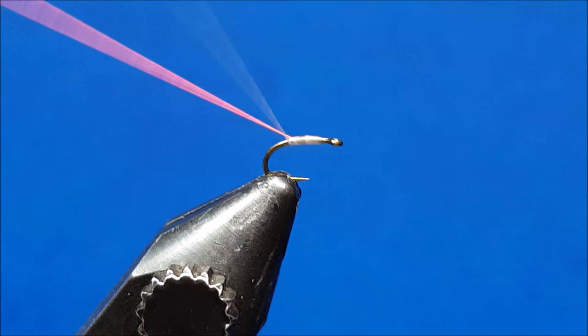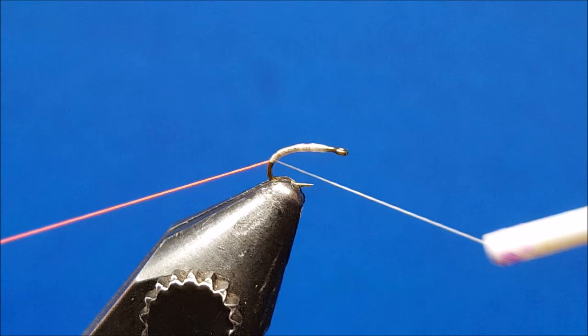I'm going to continue to wrap this back and slightly down the bend of the hook, trying to make sure that that orange thread stays on the opposite side of the hook shank.